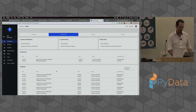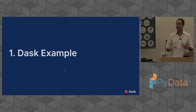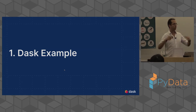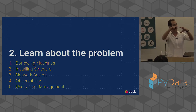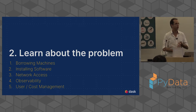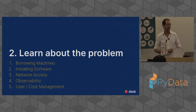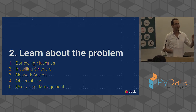I'm going to switch back to slides. We'll refer back to that example a few times — it illustrated several things I'm going to talk about. Now, part two of the talk: learning about the problem. We're going to look at what's underneath the iceberg. We'll talk about borrowing machines, installing software, network access, observability, and user and cost management. These are the things I see most often. The iceberg is huge — there are lots of icebergs. This is my version.